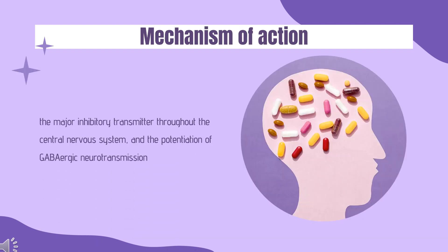Mechanism of Action: Gamma-aminobutyric acid (GABA) is the major inhibitory transmitter throughout the central nervous system, and potentiation of GABAergic neurotransmission is a crucial mechanism through which anti-epileptic agents combat pathologic excitatory neurotransmission seen in epilepsy. Vigabatrin increases concentrations of GABA in the CNS by irreversibly inhibiting the enzyme responsible for its metabolism to succinic semialdehyde — gamma-aminobutyric acid transaminase (GABA-T).